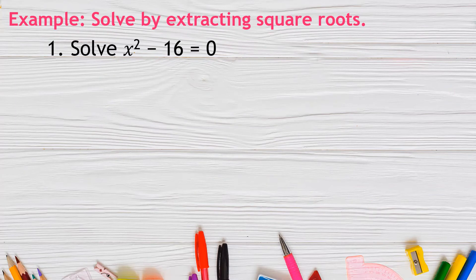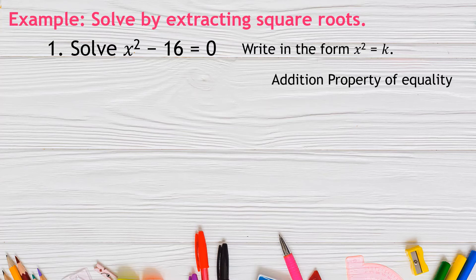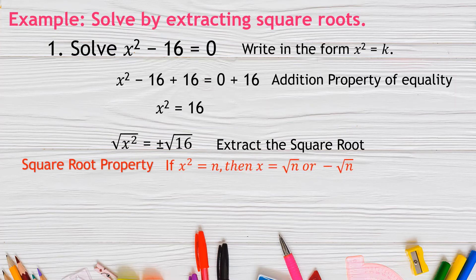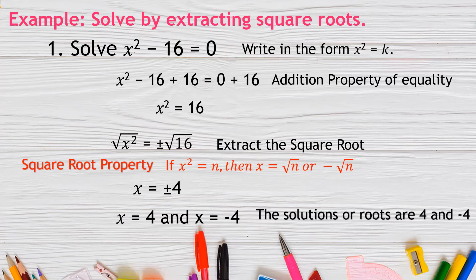Example 1: Solve x² − 16 = 0 by extracting the square root. First, write it in the form x² = k by applying the addition property of equality: x² − 16 + 16 = 0 + 16, giving x² = 16. Then extract the square root: √(x²) = x and √16 = ±4. Therefore, x = 4 and x = −4 are the solutions.